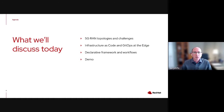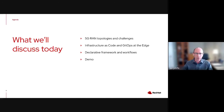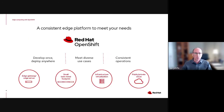Today we'll discuss some of the 5G RAN challenges, taking those concepts and applying them to infrastructure as code at the edge, going through some declarative frameworks and workflows for these deployments, and then wrapping with a demo. One of the key technologies we're leveraging is OpenShift — it's a distribution of Kubernetes that comes with things like a registry and many other important components like networking overlays.